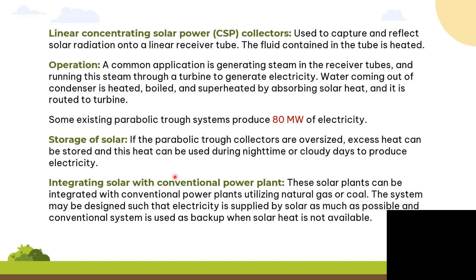For solar energy storage: if the parabolic trough collectors are oversized, excess heat can be stored, and this heat can be used during nighttime or cloudy days to produce electricity. Integrating solar with conventional power plants — this solar plant can be integrated with a conventional power plant utilizing natural gas or coal. The system may be designed such that electricity is supplied by solar as much as possible, and the conventional system is used as backup when solar heat is not available.